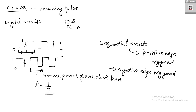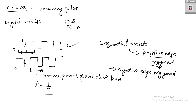Generally in digital circuits we give square pulses, or a square wave, as the clock. That is the basic introduction to clock. You can give it in two ways: either starting from 0, toggling to 1, then back to 0 — like that. If the sequential circuit gets triggered when the transition happens from 0 to 1, then such sequential circuits are known as positive edge triggered circuits.